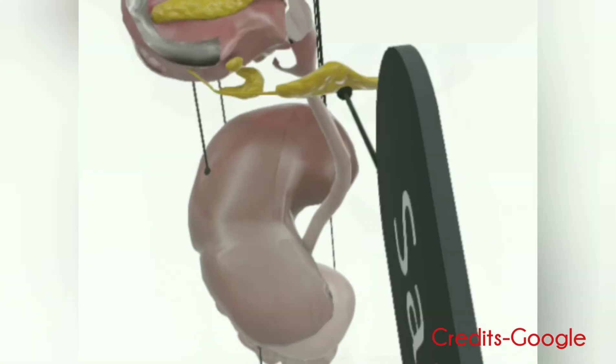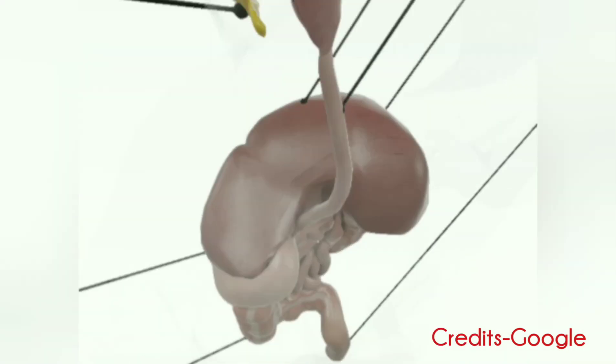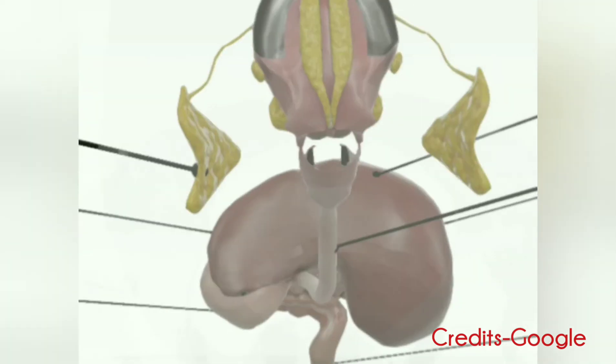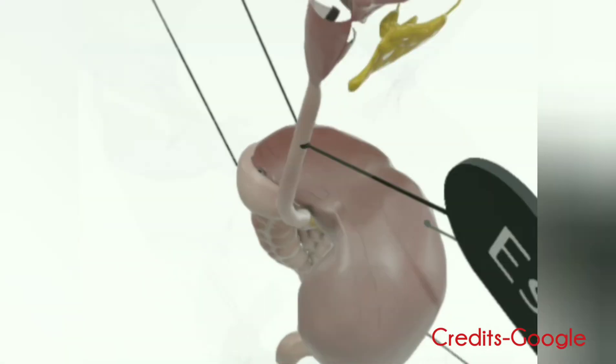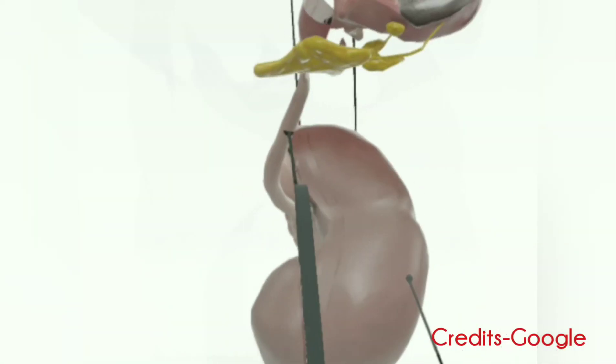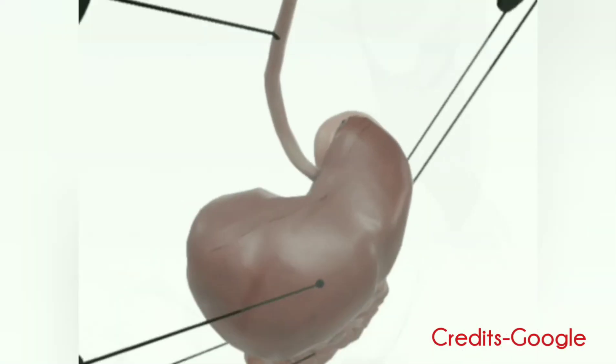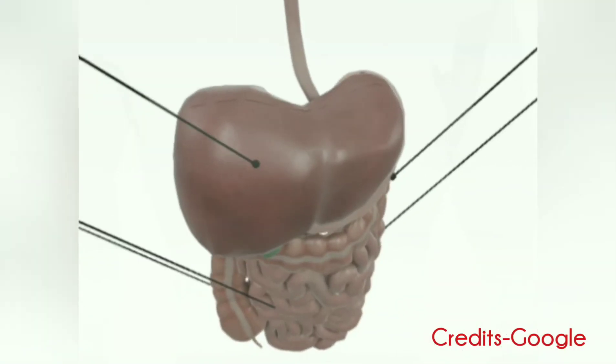There are three main divisions: the left gastric artery, the common hepatic artery, and the splenic artery.